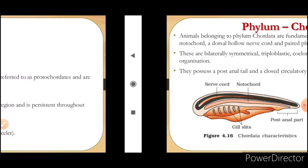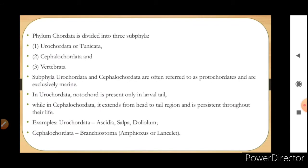Phylum Chordata is divided into three sub-phyla: first is Urochordata (or Tunicata), Cephalochordata, and Vertebrata. Sub-phyla Urochordata and Cephalochordata are often referred to as protocordates and are exclusively marine animals.